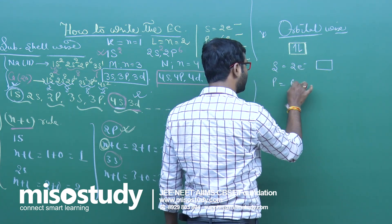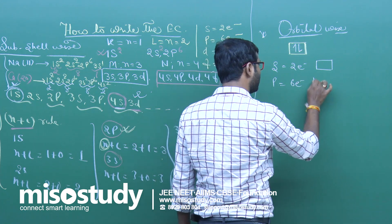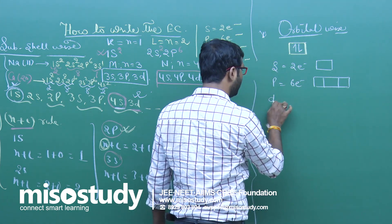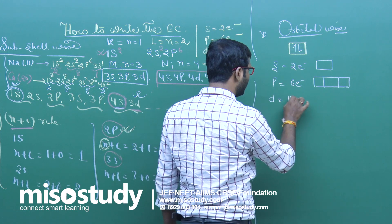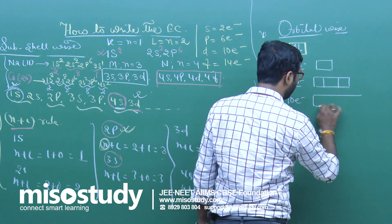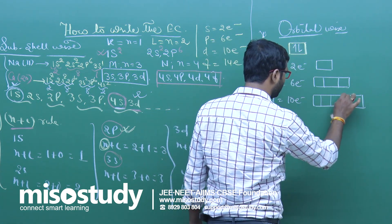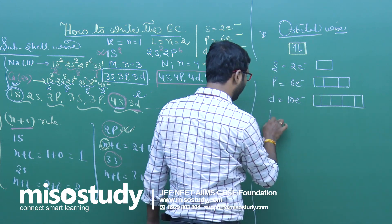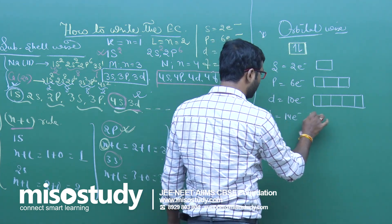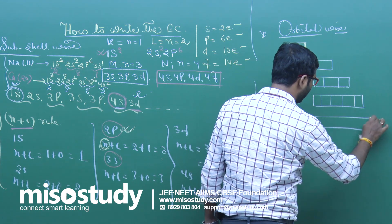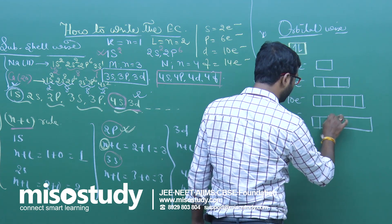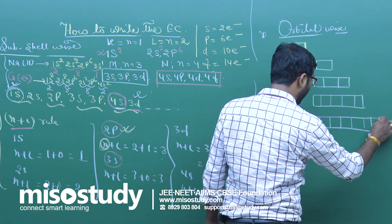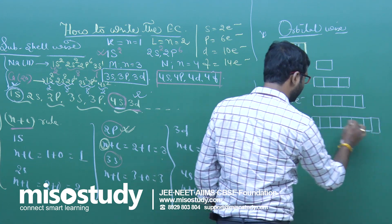P has 6 electrons, so it has 3 orbitals. D has 10 electrons, so it has 5 orbitals. F has 14 electrons, so it has 7 orbitals.